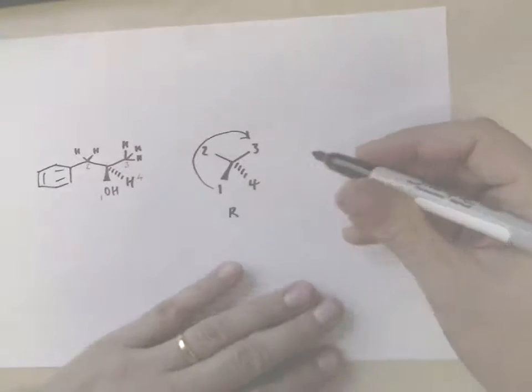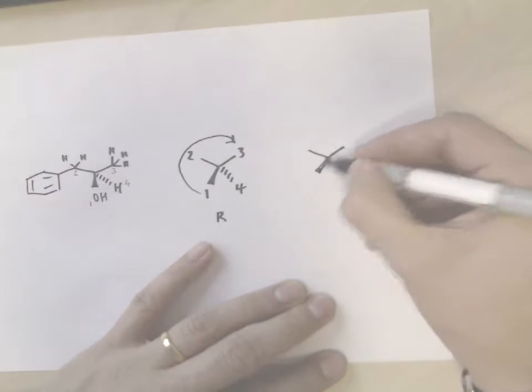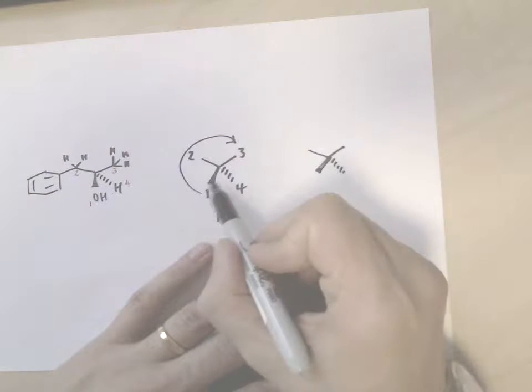If the groups went round the other way, so if we redraw this and change the order of groups here...